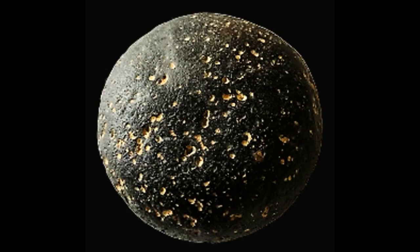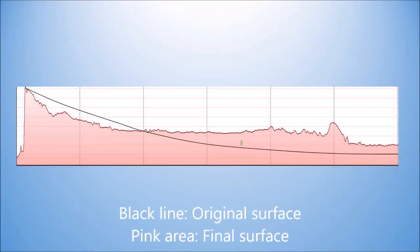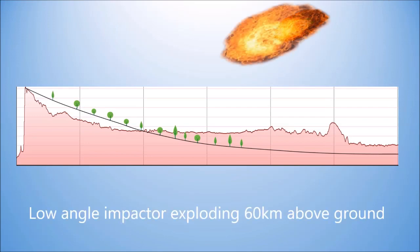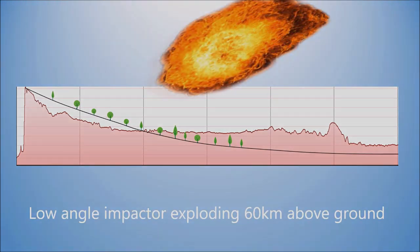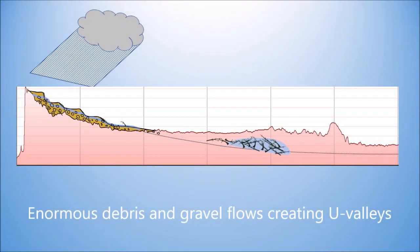Splash-formed tektites acquired their comminuted quartz cover upon landing. Later, evaporated groundwater and water contained in the comet created a tremendous downpour, making huge debris flows from the mountains encircling the Korat Plateau. In front, this created the low-terrace gravel pits, like Ban the Chang.